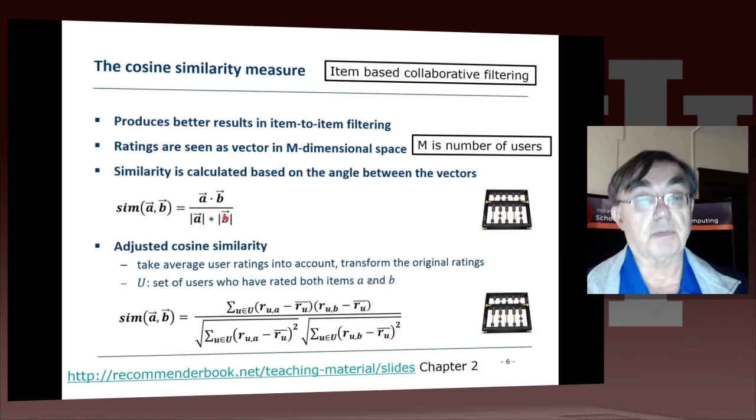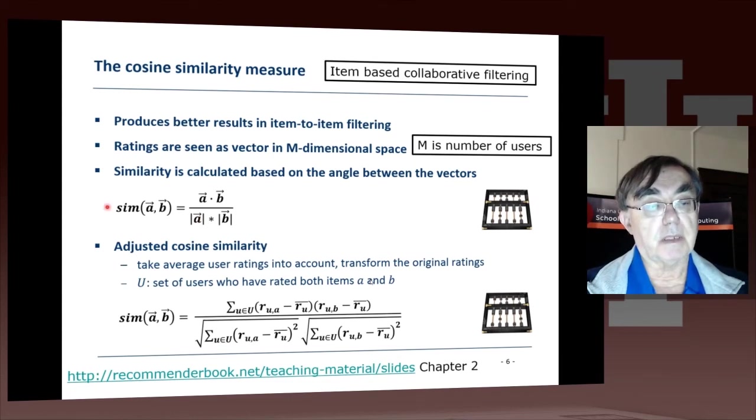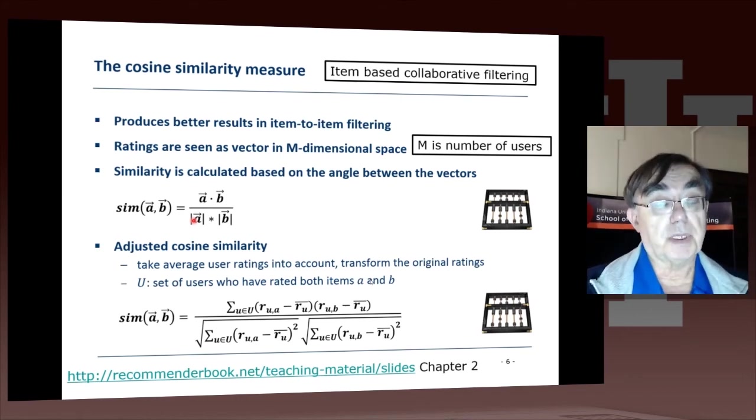When we calculate this length A, we only calculate it in the sum over the users in the set B_U, and B_U depends on both A and B. This makes it a little different from normal scalar products and normal intuition. Normally, the length of A is something that only depends on A. However, because we're only summing over the users in common between A and B, the length of A depends on B. That's exhibited in this formula here.